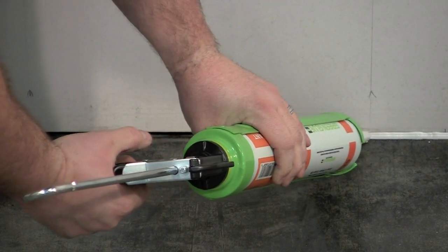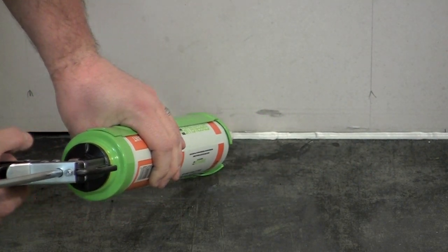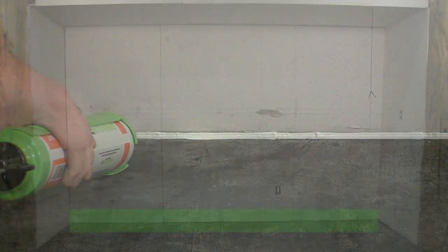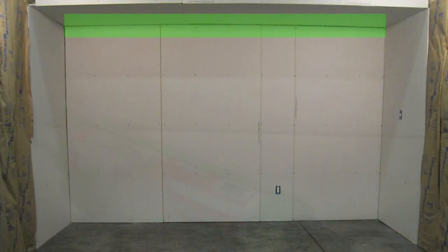Green Glue Noise Proofing Sealant is intended to fill small 1/8-inch gaps to moderately sized 1/2-inch gaps where the wall meets the floor and where the wall meets the ceiling.